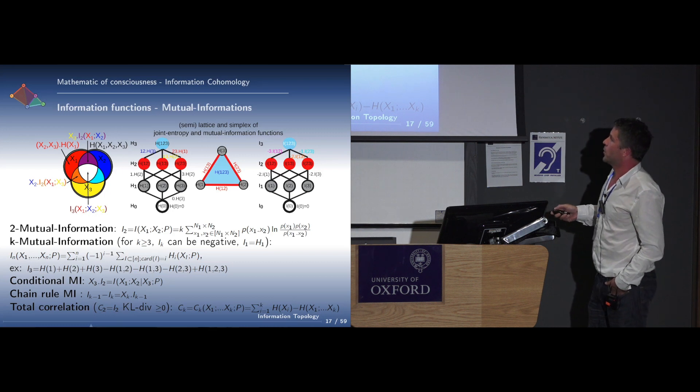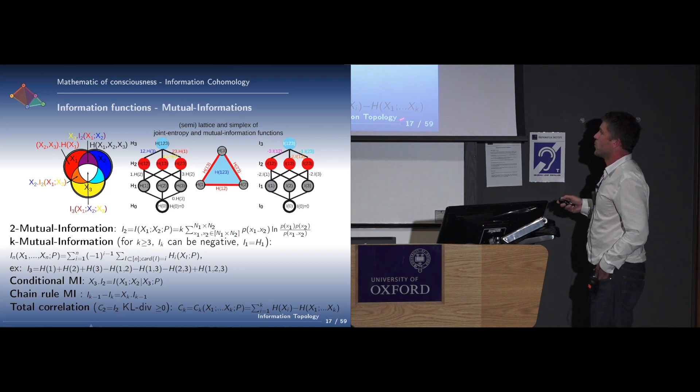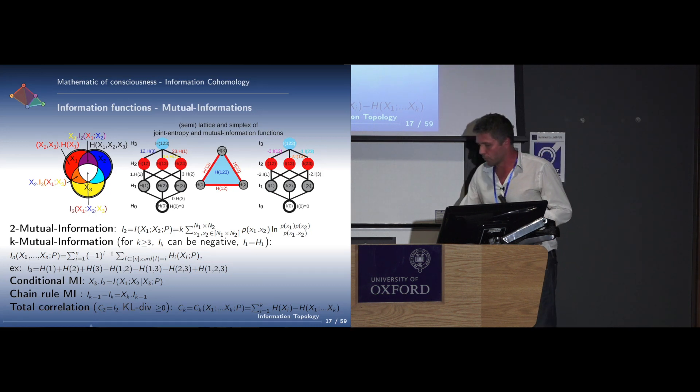You have the conditional mutual information, you have also a chain rule, and we are also interested in integrated information, which was called total correlation by Watanabe, which is the sum of the marginals minus the joint entropy.